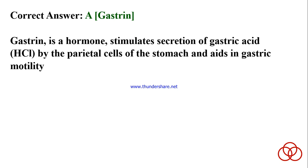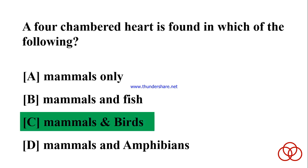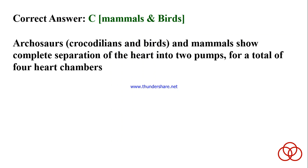A four-chambered heart is found in which of the following? A) Mammals only. B) Mammals and fish. C) Mammals and birds. D) Mammals and amphibians. Correct answer: C. Mammals and birds. Crocodilians, birds, and mammals show complete separation of the heart into two pumps, for a total of four heart chambers.